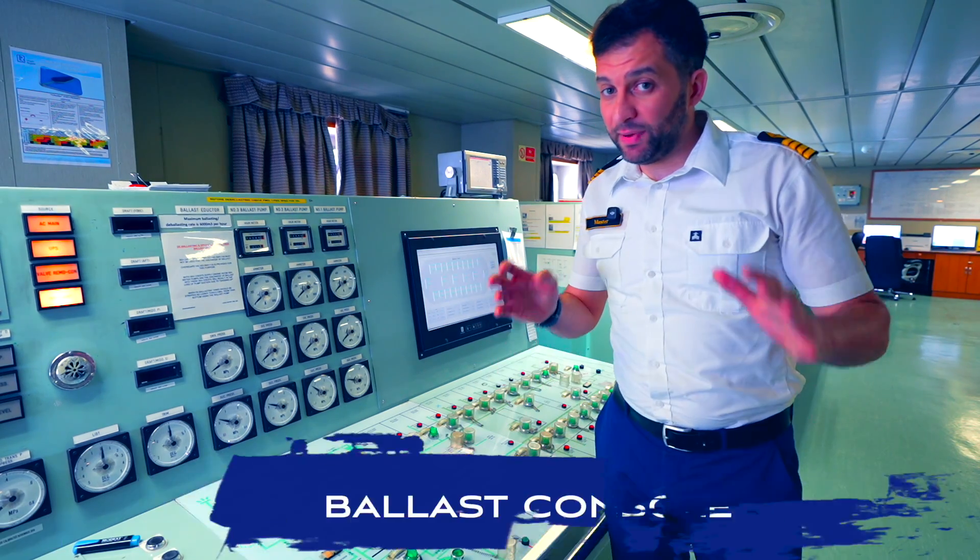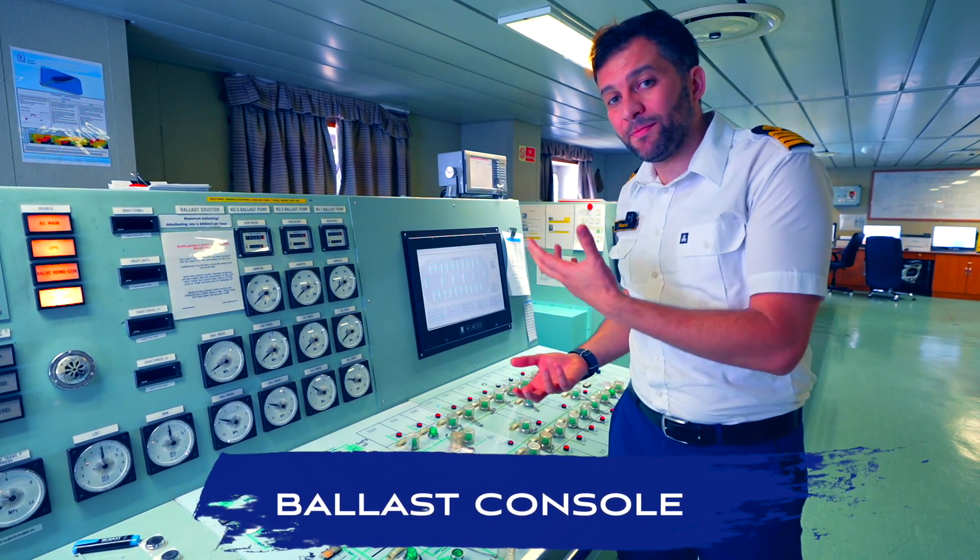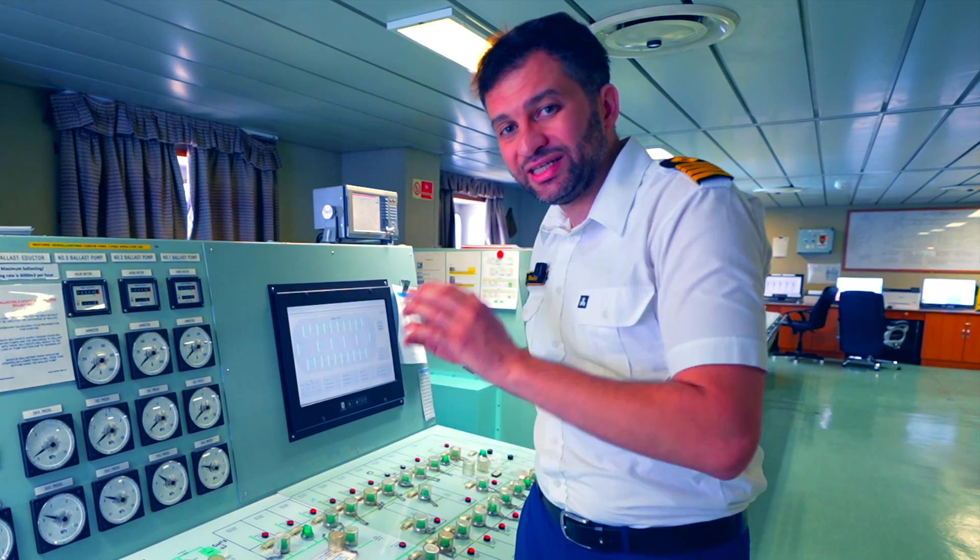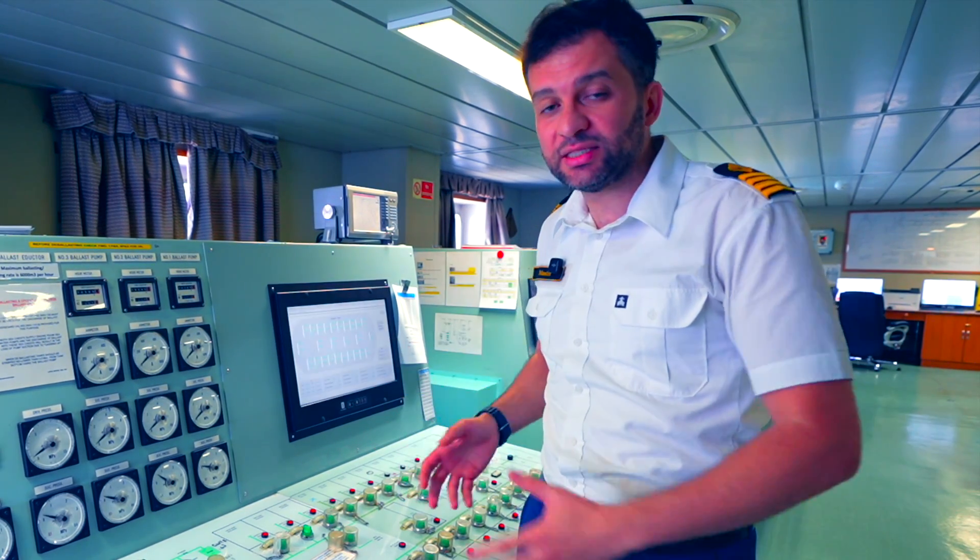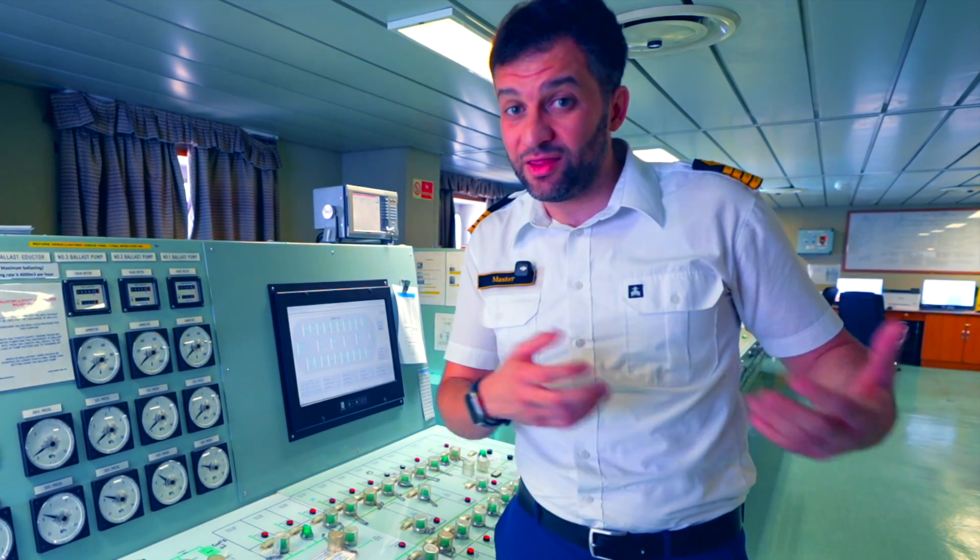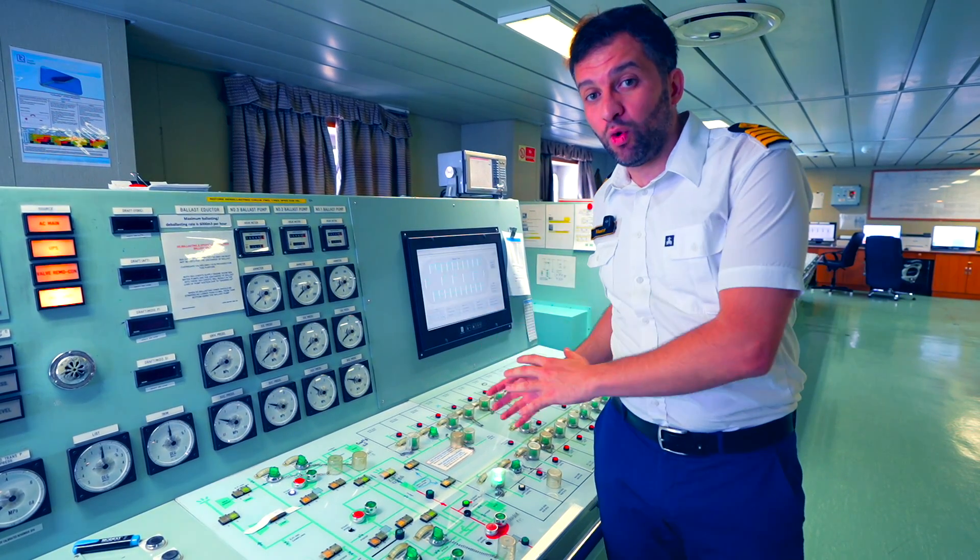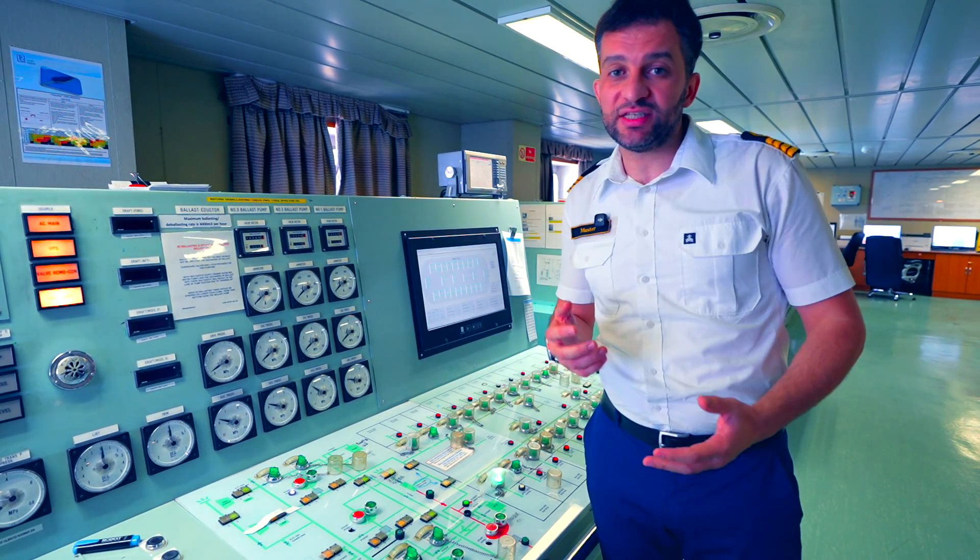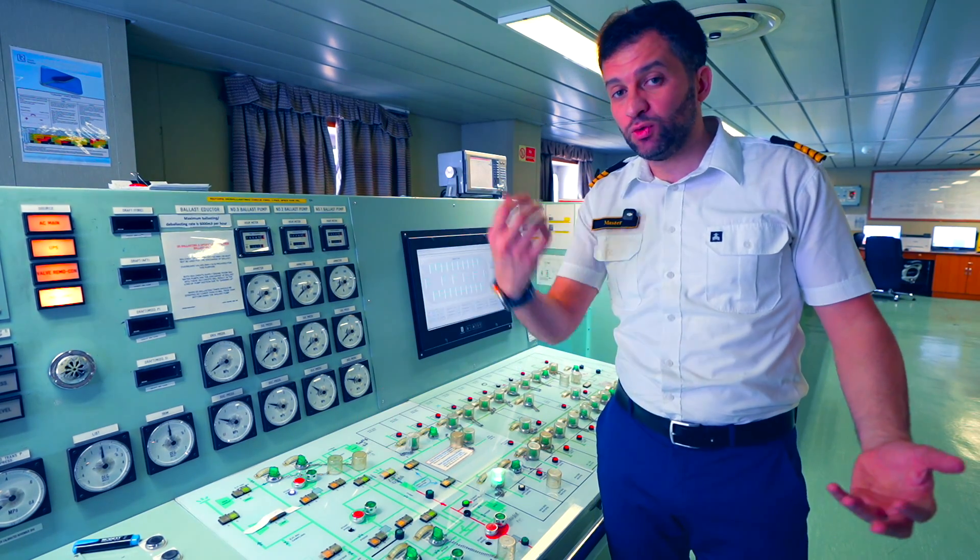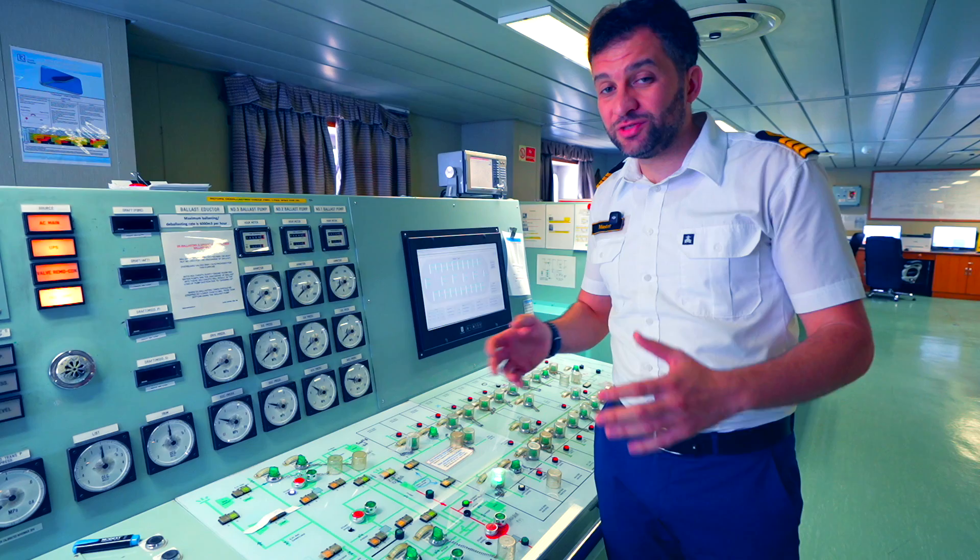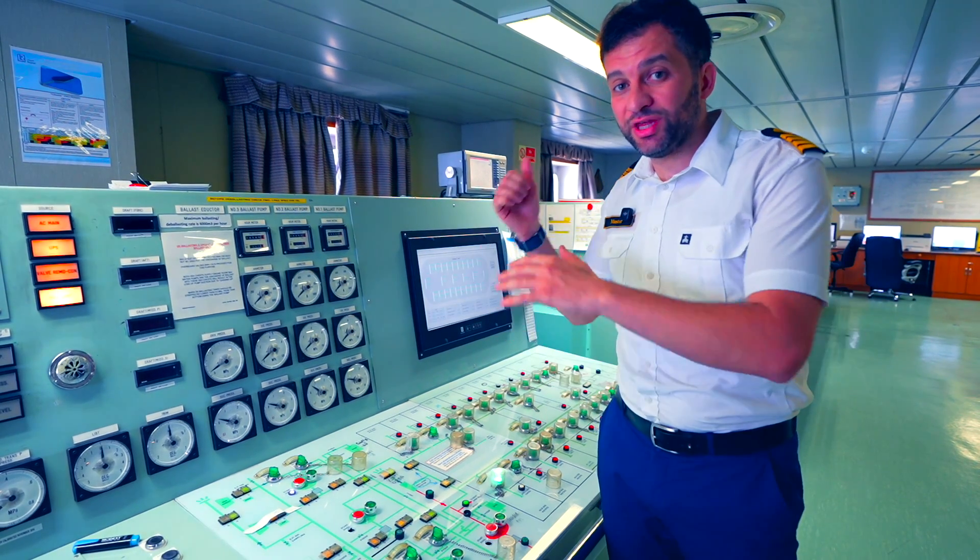The second panel is the ballast console. Here where we manage our ballast water. Ballast water is basically sea water taken into dedicated tanks called the ballast tanks in order to compensate the weight in the vessel. If you are loading LNG cargo we discharge the water from the ballast tanks and vice versa, if you are discharging LNG cargo we take sea water inside these ballast tanks. This operation is performed simultaneously with the cargo loading or cargo discharging.